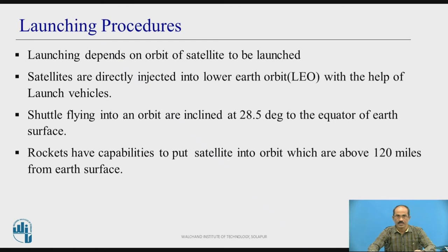Launching procedures cover the various procedures used to launch a satellite. Satellite launching depends on the orbit the satellite is to be launched into — such as LEO, MEO, and GEO. Different orbits have different procedures. Satellites are directly injected into Low Earth Orbit (LEO) with the help of launch vehicles. Satellites flying into an orbit are inclined at 28.5 degrees to the equator of the Earth. Rockets have the capability to put satellites into orbits above 120 miles from Earth's surface.